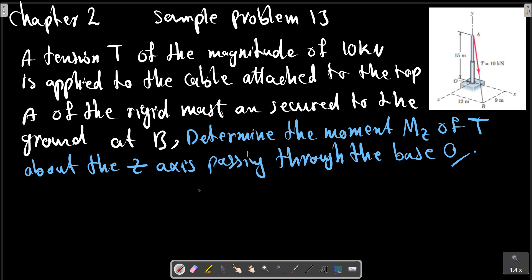Chapter 2, Sample Problem 13. A tension T of the magnitude of 10 kN as shown in the picture is applied to the cable attached to the top of the rigid mast and secured to the ground at B. Determine the moment MZ of T about the z-axis passing through the base O.